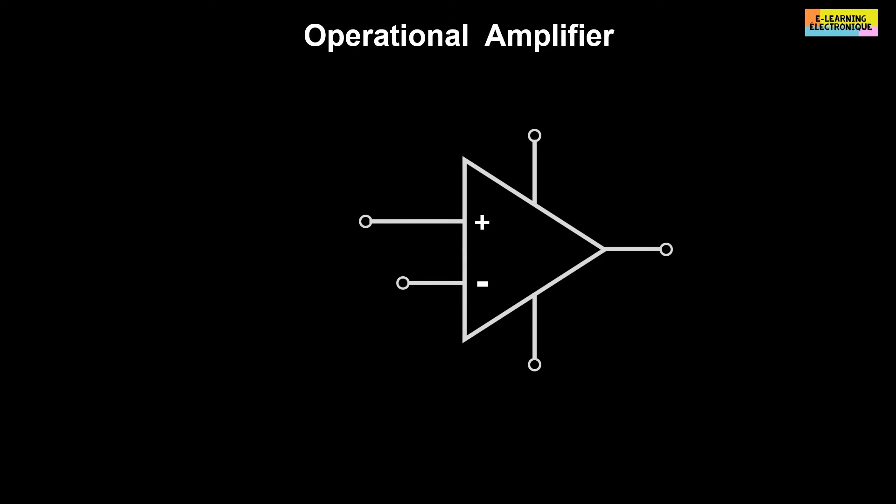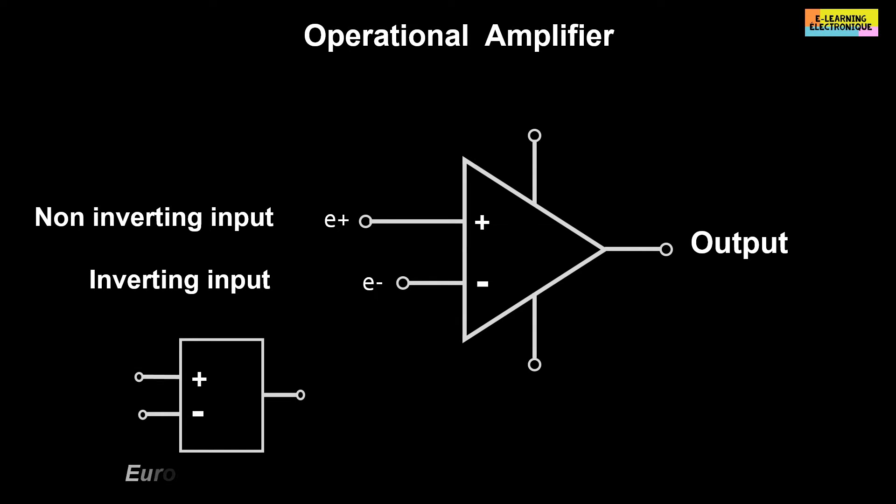It has the shape of a triangle with a point oriented to the right. It has two inputs, one positive and the other negative, and only one output. The positive pole is the non-inverting input and the negative pole is the inverting input. There are other representations such as the European standard but in practice it is not used and it is rarely found in the technical designs of manufacturers.